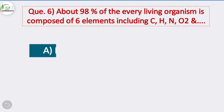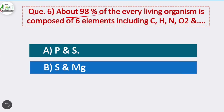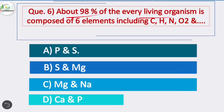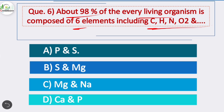Question 6: About 90 percent of every living organism is composed of six elements. Option A is correct — the six elements are carbon, hydrogen, nitrogen, oxygen, phosphorus, and sulfur, which contribute to ninety percent of every living organism's composition.